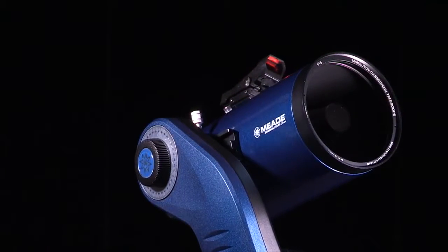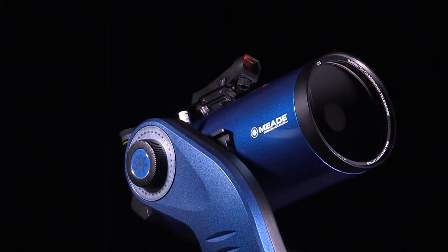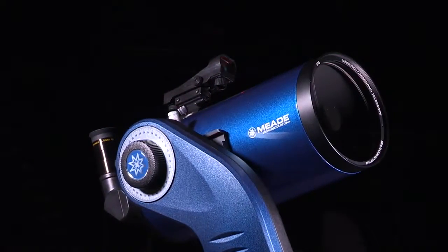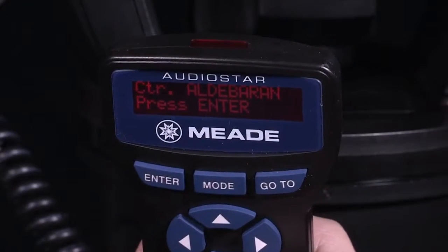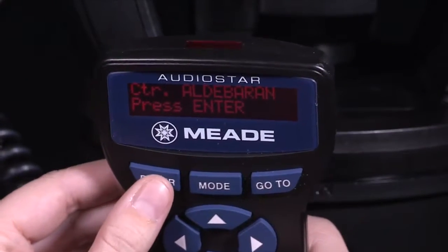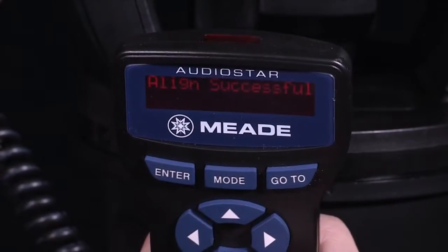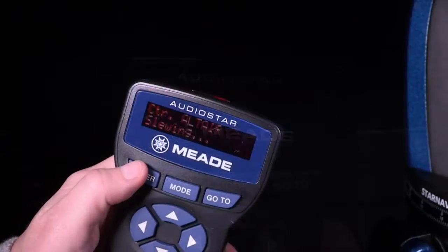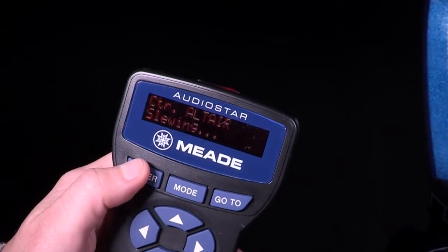If that area of the sky is obscured by an object, you can prompt AudioStar to choose an alternate star by pressing either one of the two scroll keys. Repeat procedure for the second alignment star. When the procedure is performed correctly, alignment successful displays. If AudioStar does not display this message, perform this procedure again.